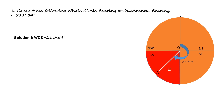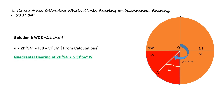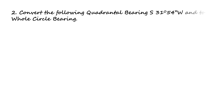From the figure, in the quadrantal system the bearing is measured from the nearest reference meridian, which in this case is south. The reduced bearing alpha equals 211 degrees 54 minutes minus 180 degrees, confirming the quadrantal bearing is S 31°54' W. If you cannot memorize the conversion table, you can draw the given data and find the solution using the simple circle rule. To convert S 31°54' W to whole circle bearing — this is the reverse conversion.